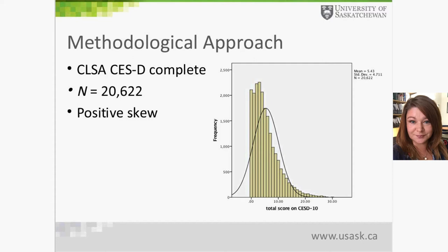We used the CLSA data from the tracking cohort for those who had complete data for the CES-D — no missing variables. As you can see, it is a rather large study sample. A few tracking cohort participants did have missing data for this, but it's also quite positively skewed, meaning most of the population sampled had relatively few symptoms of depressed mood as reported by the CES-D.